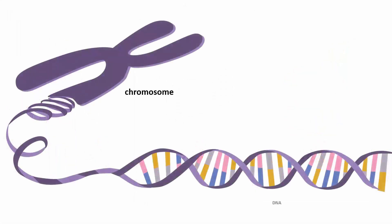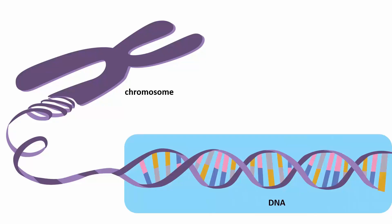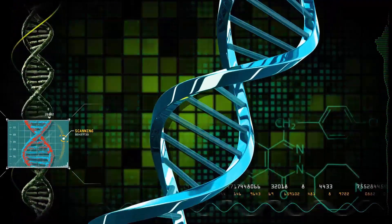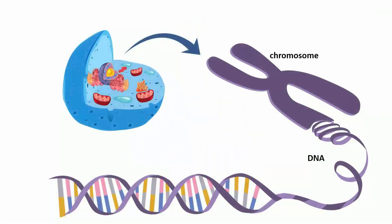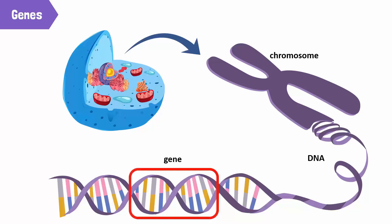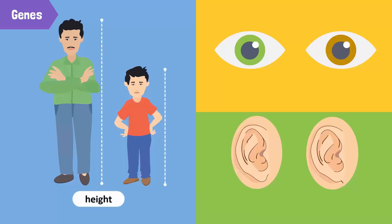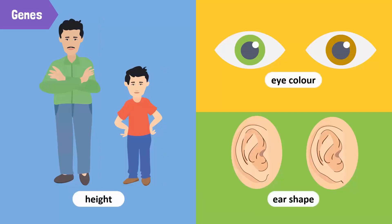A chromosome is made up of DNA molecules packed together. The shape of the DNA looks like a twisted ladder, also called a double helix. Each chromosome is made up of thousands of genes. Genes are the basic units of heredity located on chromosomes. They are short sections of DNA responsible for the transmission of characteristics from parents to offspring. Every hereditary characteristic in an organism — for example, height, eye color, shape of the earlobe — is controlled by genes.